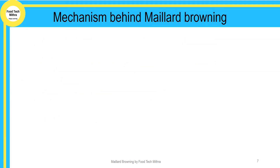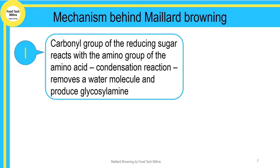Now we will see the mechanism behind Maillard browning. It occurs in three main steps — I am covering the simplified steps, as in depth there are many complex sub-reactions. In the first step, the amino group (NH2) of any amino acid and the carbonyl group of the reducing sugar undergo a condensation reaction to form a product called glucosylamine, along with water.